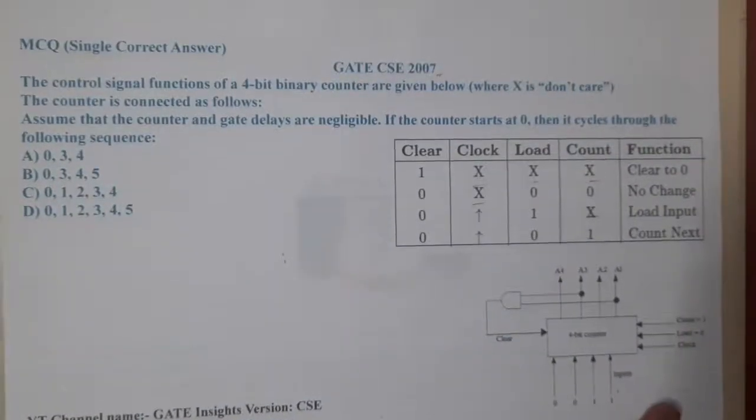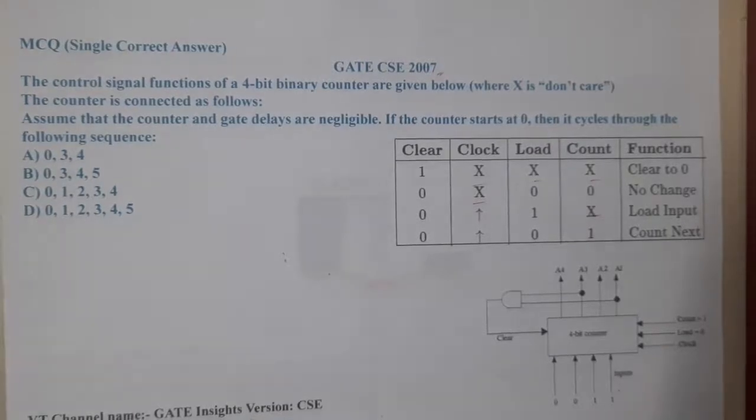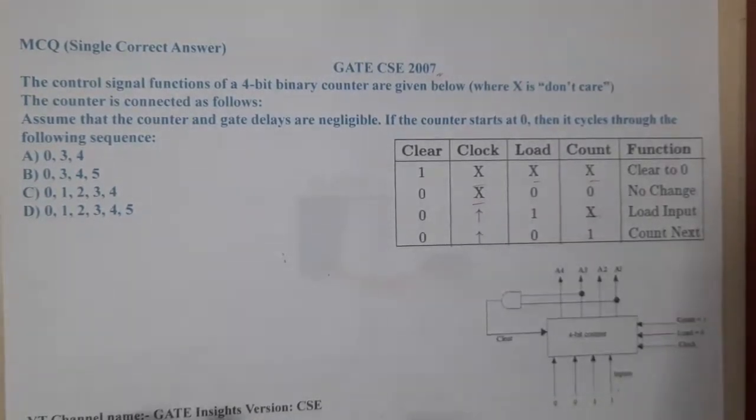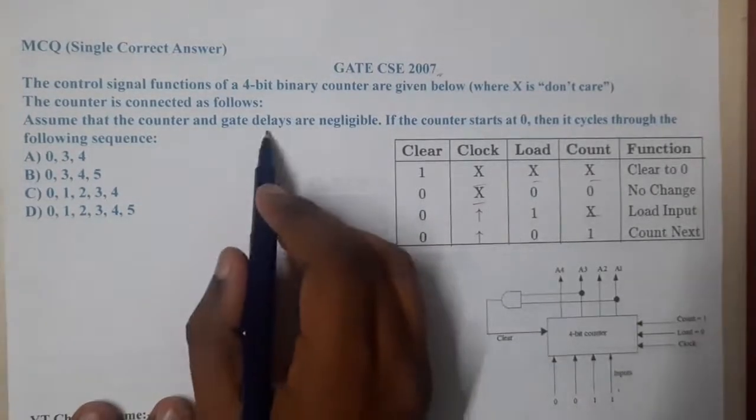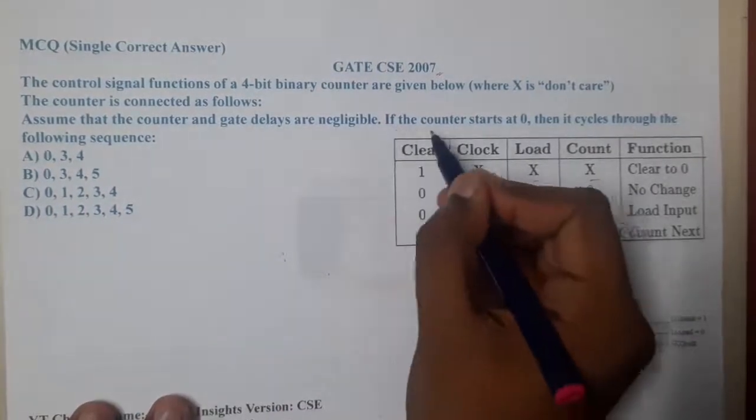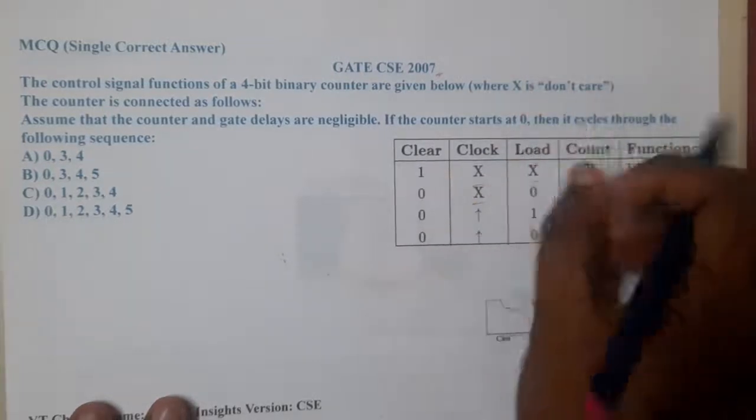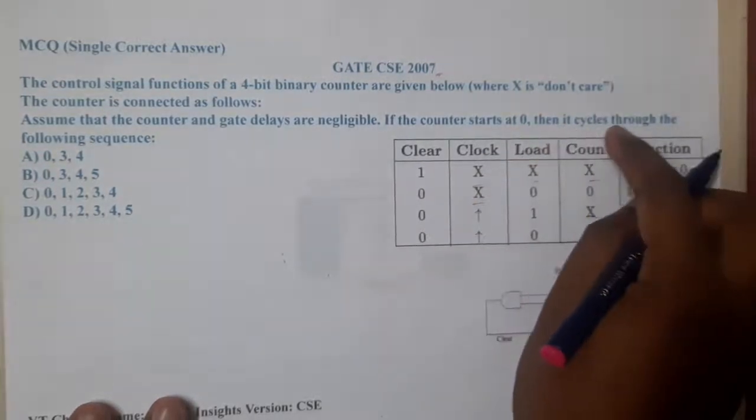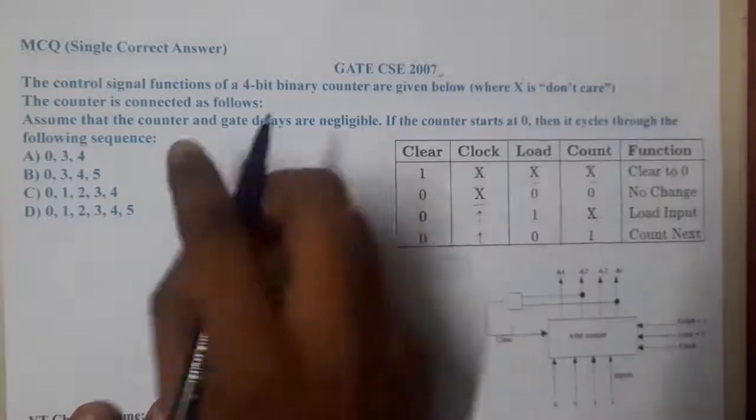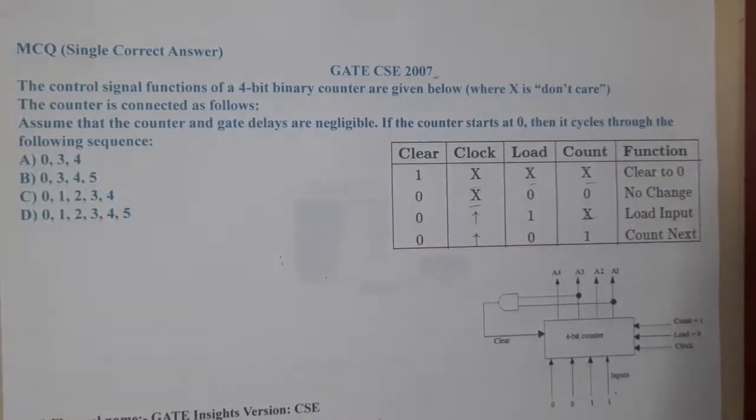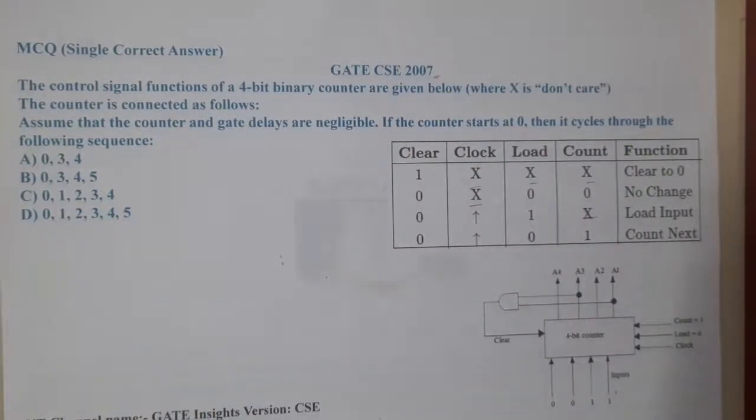The counter is connected as follows. They gave a diagram for that particular counter. They told that assume the counter and gate delays are negligible, so there is no delay between them. If the counter starts counting from zero, then it cycles through a sequence. It counts like 0,3,4 or 0,3,4,5 or 0,1,2,3,4 or 0,1,2,3,4,5. In what sequence is it going to count is the question here.